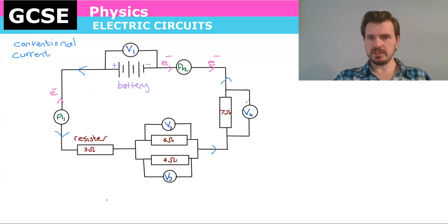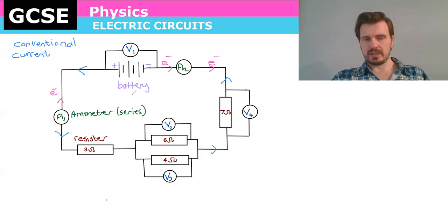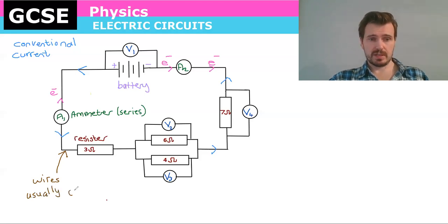Moving along from the battery we have an ammeter. That A1 represents an ammeter and that is connected in series, meaning it's along these wires. Let me just make a note. These lines here are all wires, they represent wires in real life, and they're usually copper because copper conducts electricity. So it's a good conductor, it allows the flow of electrons.